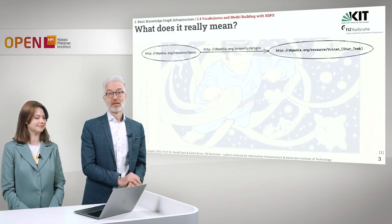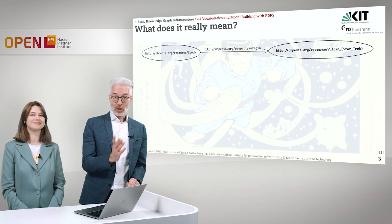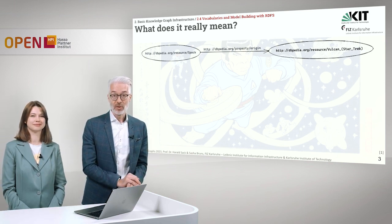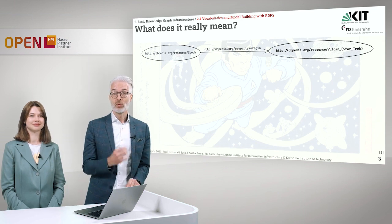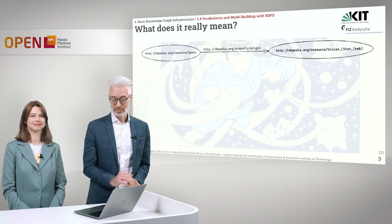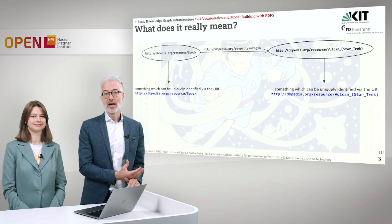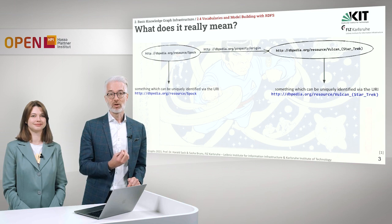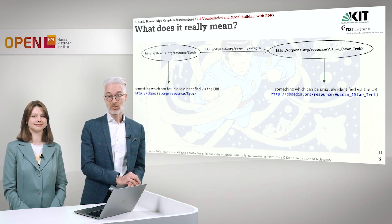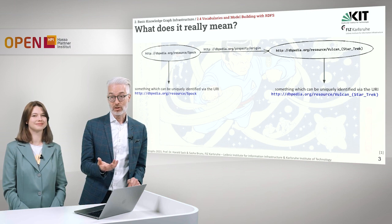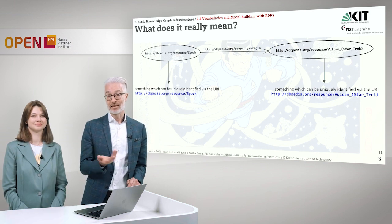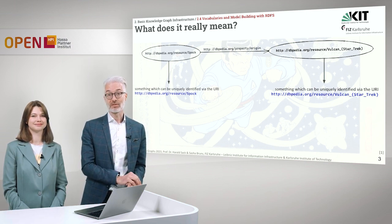First of all, let's recap. You remember our graph here — we have Spock, he has the origin, planet Vulcan. But what does this really mean? What do we see here? The only thing that we see here is that something which can uniquely identify via a URI, which refers to Spock, is connected to another URI, which is uniquely identified by a URI for planet Vulcan.